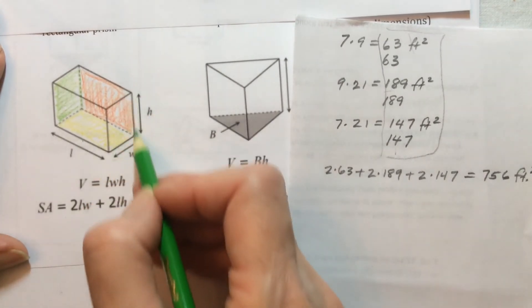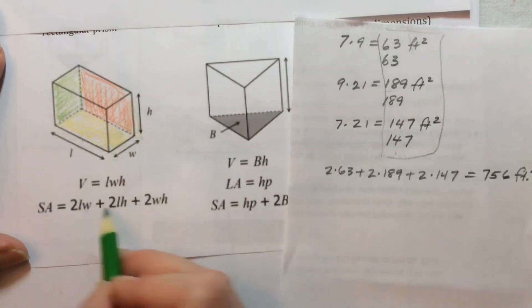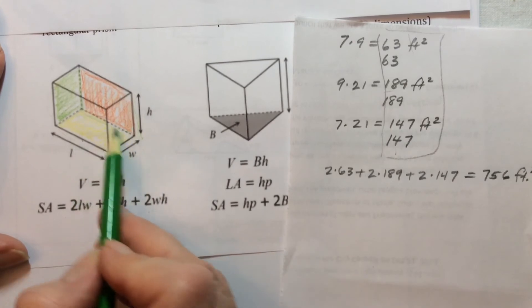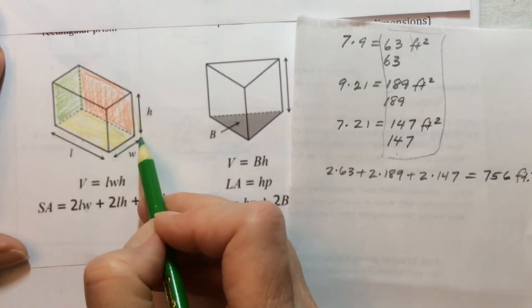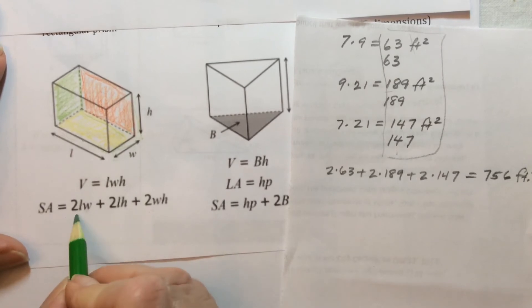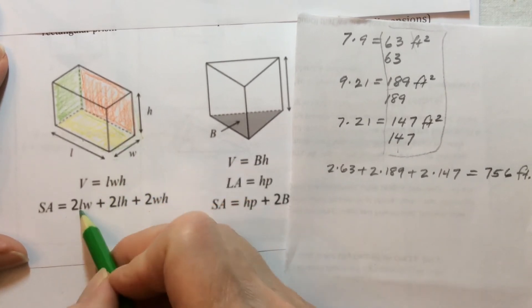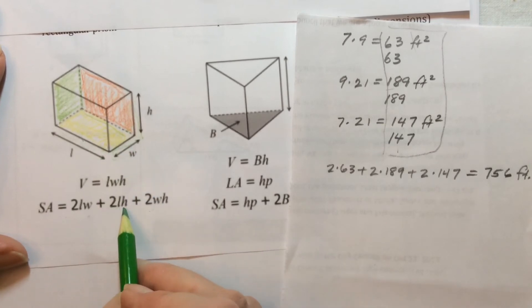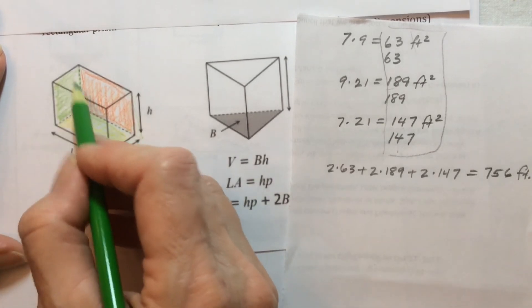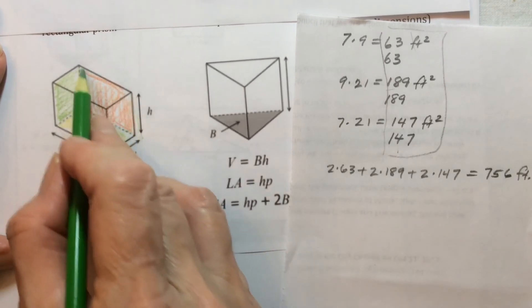2 times the width times the height, 2 times the length times the width, and 2 times the length and height. That's the length, and that's this one.